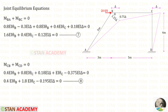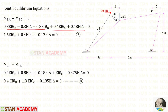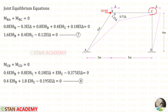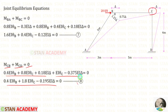Now let us make the joint equilibrium equations. At joint B, when we add M-BA and M-BC it will equal zero. From the slope deflection equations, let us apply the expressions for M-BA and M-BC. When we add them, we will get equation number 7. Similarly, at joint C, when we add M-CB and M-CD it will equal zero. Let us apply the expressions for M-CB and M-CD. After adding them, we will get equation number 8.